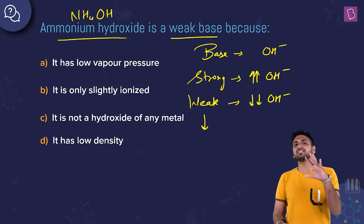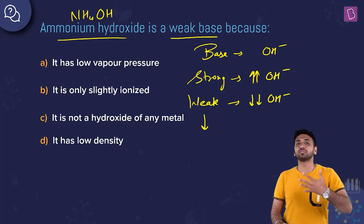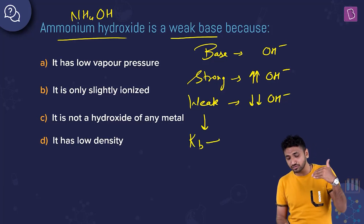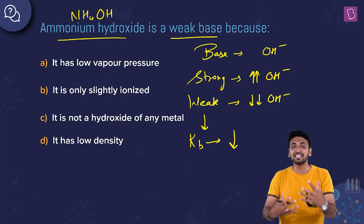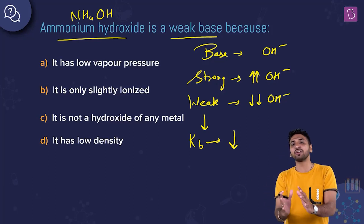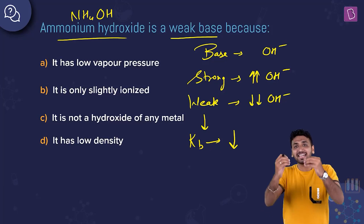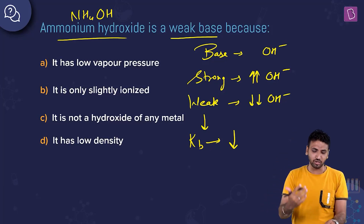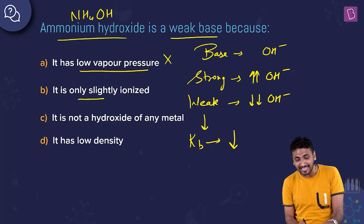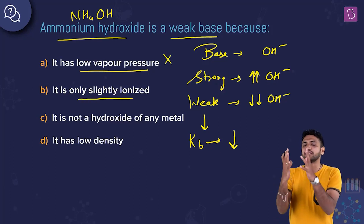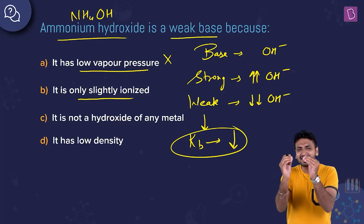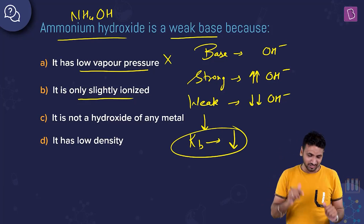How do we quantify this? With the help of Kb, the dissociation constant of the base. If the value of Kb is less, that means the base weakly ionizes — it breaks apart less. Looking at option B: 'it is only slightly ionized' — this perfectly aligns. Low Kb means less dissociation, meaning slight ionization. So yes, option B is correct.